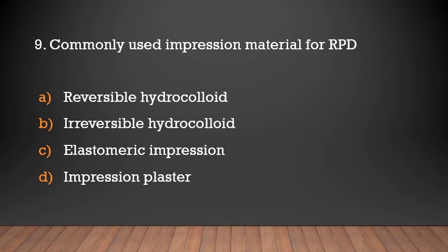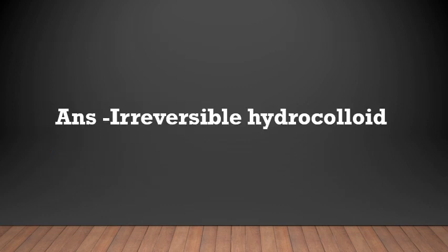The commonly used impression material for RPD is irreversible hydrocolloid. An example of an irreversible hydrocolloid is alginate, which is used as the impression material for RPD.